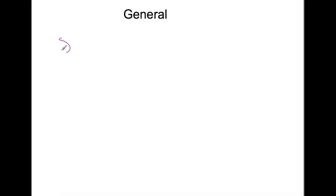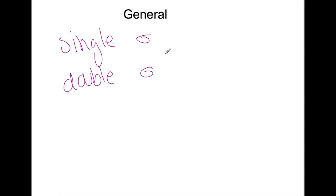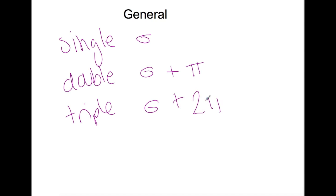So some general notes before we go on to some examples. All of your single bonds are sigma — they're always your end-on overlap. A double bond consists of a sigma bond from end-on overlap of your hybridized orbitals, plus a pi bond from side-on overlap of your unhybridized p orbitals. And a triple bond is end-on overlap of your hybridized orbital plus two pi bonds coming from the side-on overlap of your two unhybridized orbitals. With this in mind, we're going to have a look at some examples.